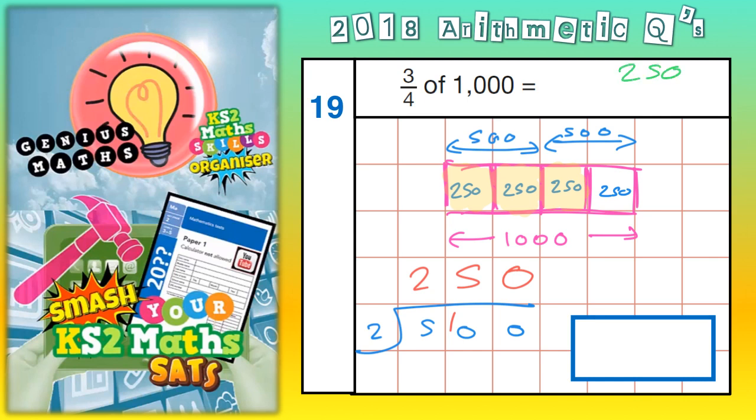Three lots of two hundred and fifty is three times zero is zero. Three times five is fifteen. Put the five in, carry the one. Three twos is six plus the one is seven. Seven hundred and fifty. Final answer is seven hundred and fifty.